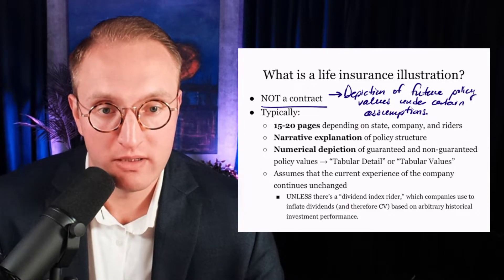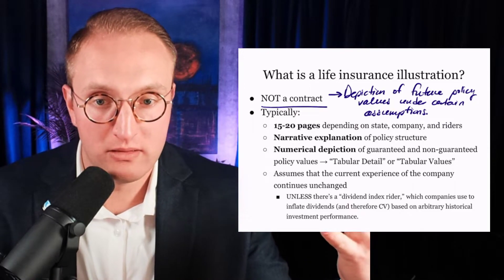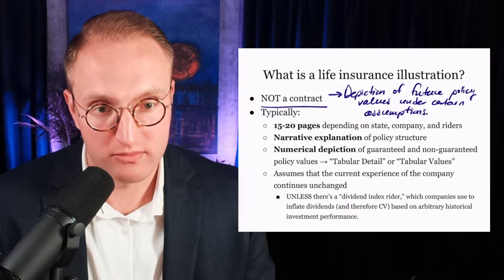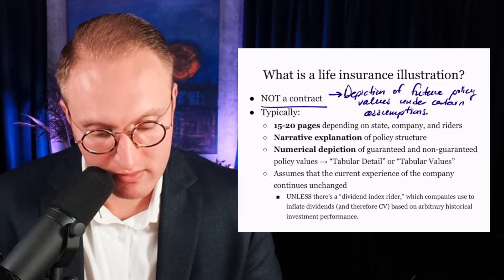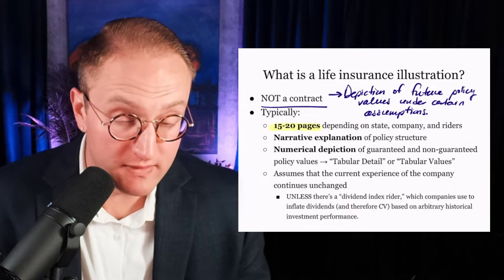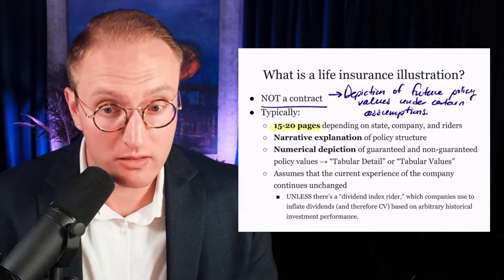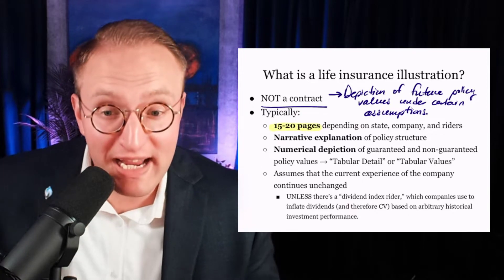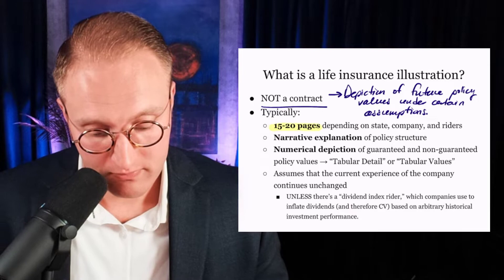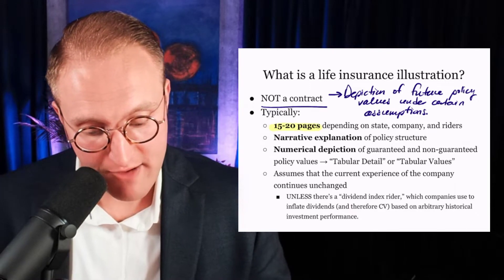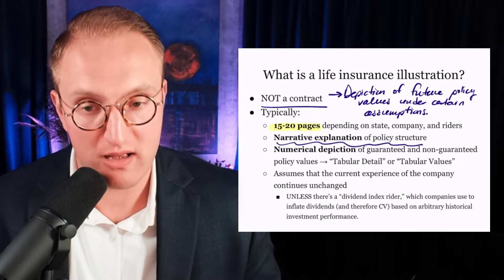That is not what we are doing here on an illustration. Numbers are depicted based on certain assumptions. They are typically 15 to 20 pages long. Relatively speaking — if you have a mortgage, have you seen how long the mortgage application is, much less the document? About half of this 15 to 20 pages consists of a narrative explanation of the structure of the policy.